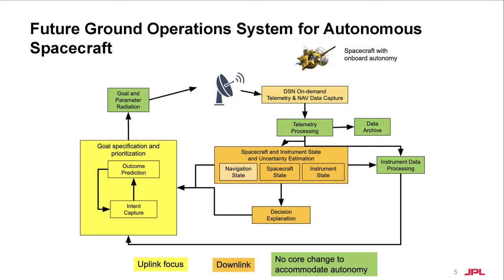Now, with autonomy onboard, the ground operations workflow will look a bit different. On the downlink side, we would have a larger effort on estimation with respect to spacecraft and instrument state and uncertainty quantification, as well as decision explanation, represented here in the orange boxes. On the uplink, represented in the yellow box, we would now focus on specification, prioritization, and outcome prediction instead of command sequencing — planning will be performed onboard. The highlighted yellow and orange boxes represent the scope of our work.